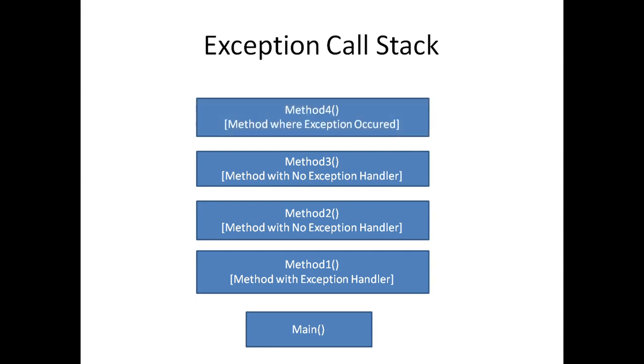So our program flow will go from main to method one, method two, to method three, and finally method four where an exception occurs. So what will happen? If method four does not find a suitable handler, it will trace back to method three and look for a suitable handler.